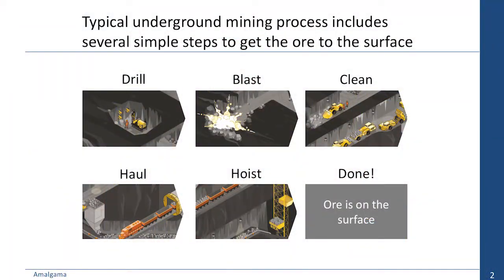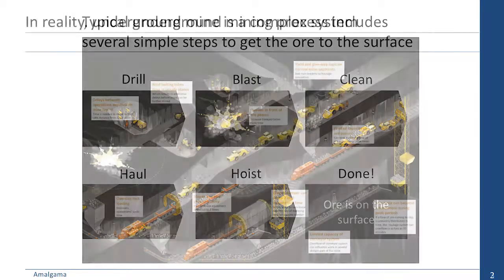A typical underground mining process includes several relatively simple steps to get the ore to the surface. First we drill the blast holes and put explosives in there. Then we do the blast clean — we just take the ore out of the stopes with scoop trams and dump trucks. Then we haul the ore, which is just delivering the ore to the point of hoisting, then we hoist it and the ore is on the surface.